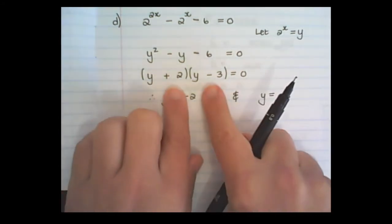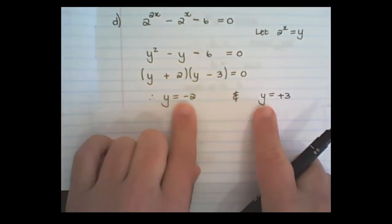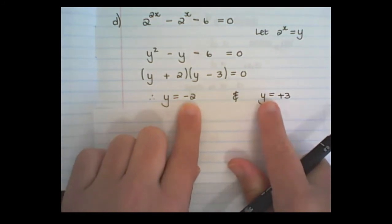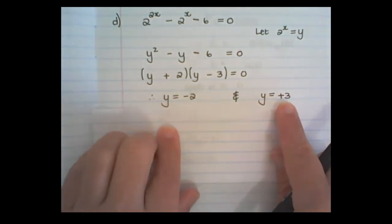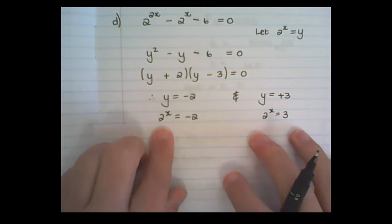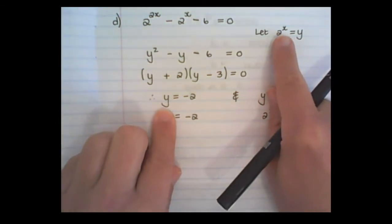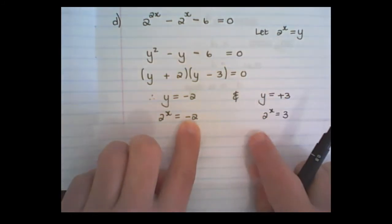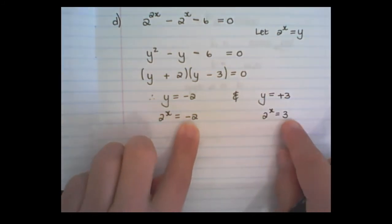So, solving both brackets, I have y equal to negative 2, and y is equal to plus 3. And now, replacing y with 2 to the power of x, I have 2 to the power of x is equal to negative 2, and 2 to the power of x is equal to 3.